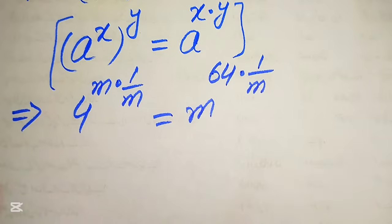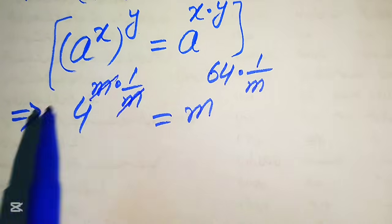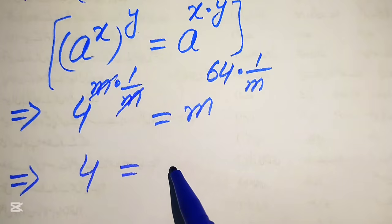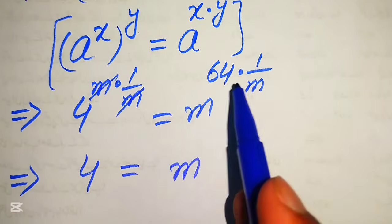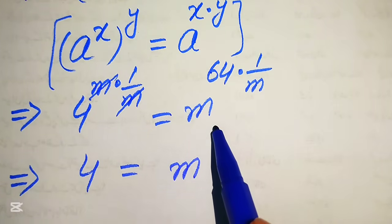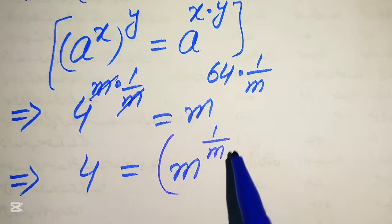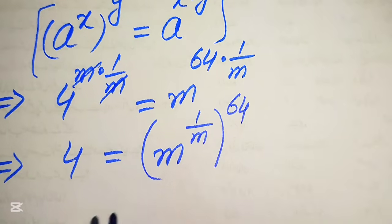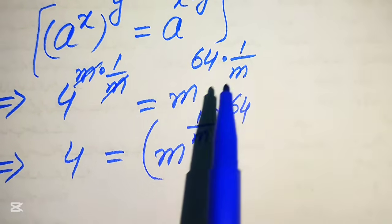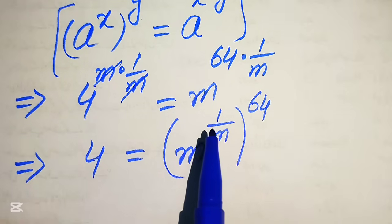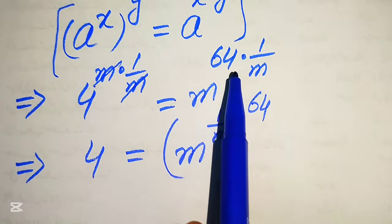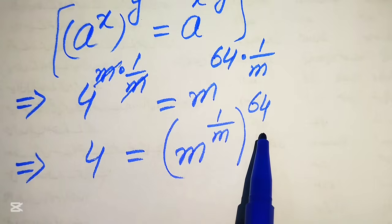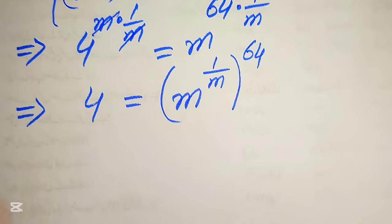The m cancels out on the left side, giving us 4 equals m to the power of 1 over m, with its exponent 64 — because 64 and 1 over m are multiplied together. Using the exponent law we rewrite this as 4 equals m to the power of 1 over m, with 64 moved outside.